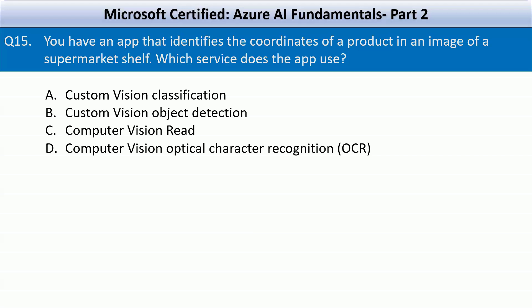The app needs to identify the coordinates of a product in an image, which means it must detect and locate objects within the image. Custom vision object detection is specifically designed to detect and localize multiple objects within an image by providing bounding box coordinates around the detected objects.